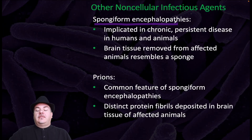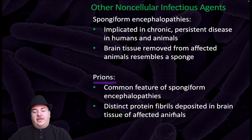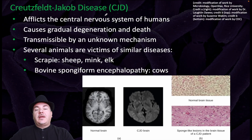Spongiform encephalitis is implicated in chronic persistent disease in humans and animals. The brain tissue removed from those affected resembles a sponge. Prions are a common feature of spongiform encephalitis. Distinct protein fibrils deposited in brain tissues affect animal cells. For example, Creutzfeldt-Jakob disease affects the central nervous system of humans, causing gradual degeneration and death.